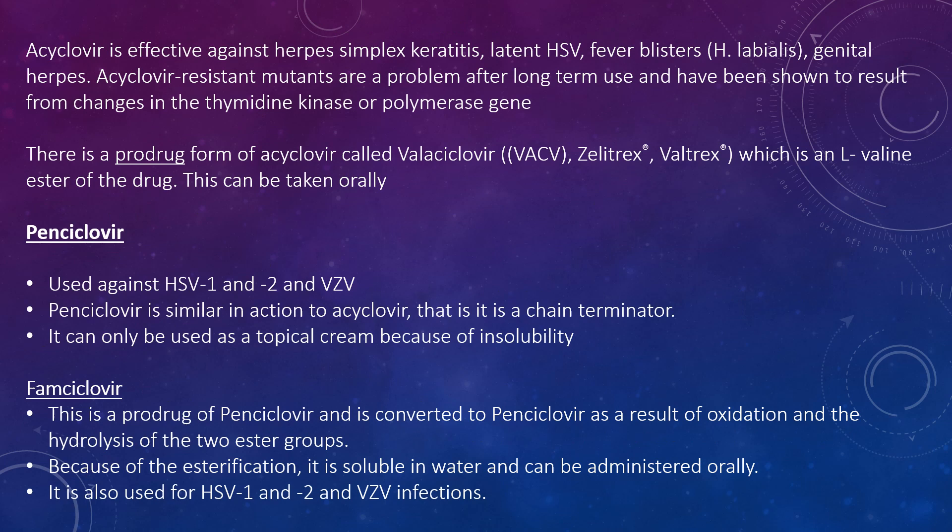Acyclovir is effective against herpes simplex keratitis, latent HSV, fever blisters caused by H. labialis, and genital herpes. Resistant mutants are a problem after long-term use and have been shown to result from changes in the thymidine kinase or the polymerase gene. There is a prodrug form of acyclovir called valacyclovir, also known as Valtrex or Zelitrex, which is an L-valine ester of the drug and may be taken orally.